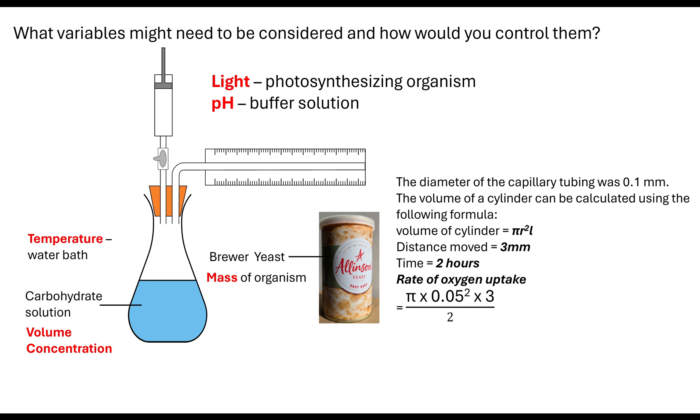So pi times 0.05 squared times 3 and divide that by the time. So they're telling us the time is 2 hours. And we would want to give that as a number, but we need to be very careful because in the exam questions, they tend to say, give the number to two significant figures or to three significant figures. So be very aware of what they're asking in the question. So in this case, I've gone to three significant figures, 1.18 times 10 to the minus 3. I've also given it in standard form. And then my units would be millimeters squared per hour. So do make sure that when you are working out the rate of your oxygen uptake that you know how to do these calculations.